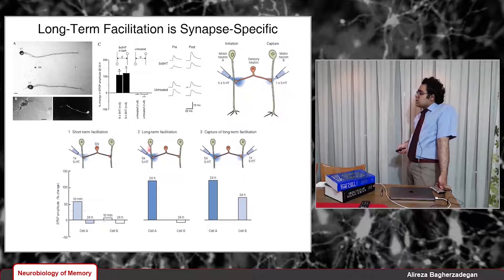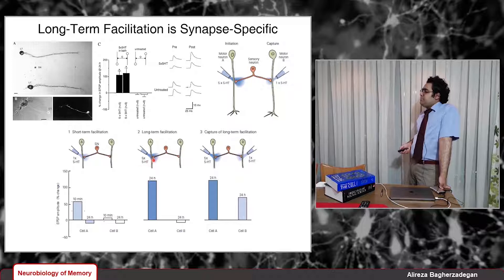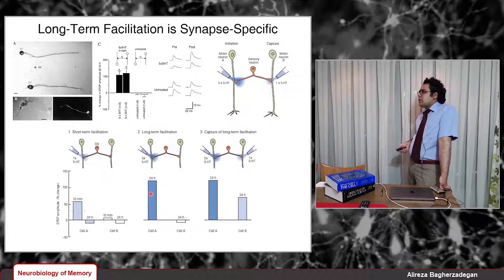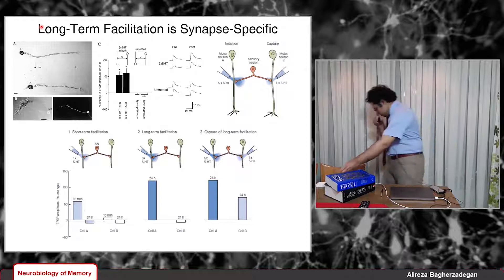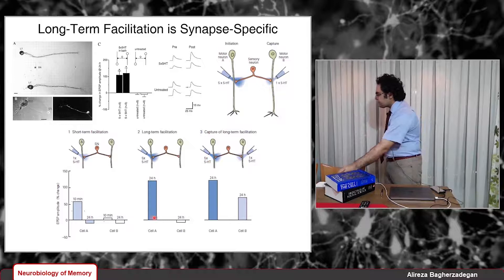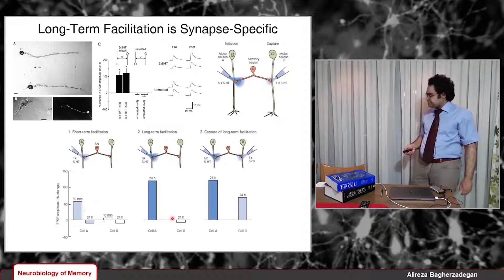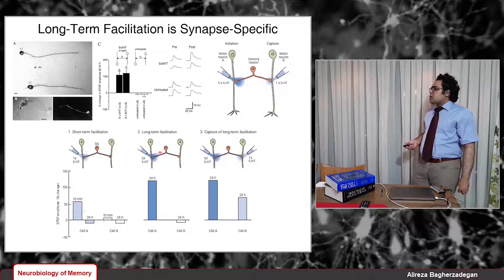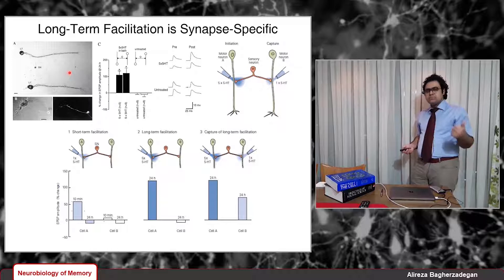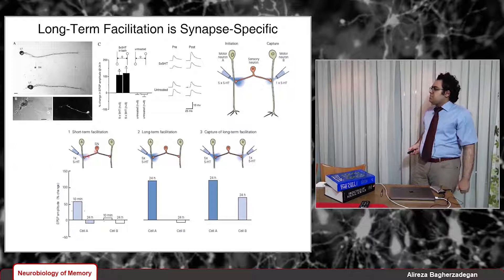Now let's see what happens when we induce long-term facilitation. We use five pulses of serotonin, and we see a much larger increase in the amplitude of EPSP that stays for 24 hours, because five pulses induce long-term sensitization. But again, at the synapse with cell B, we see nothing — not even short-term synaptic facilitation. So these two experiments prove that both long-term and short-term sensitization or synaptic facilitation are synapse-specific.